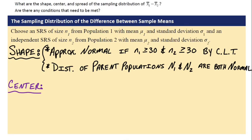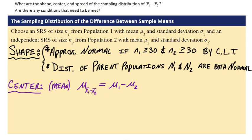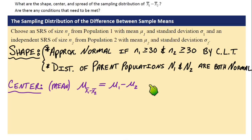How about the center? The center of the distribution — we're talking about the mean. The notation would be mu with a subscript of x bar 1 minus x bar 2, and for that we would just subtract the two population means. So the center would be mu 1 minus mu 2. There isn't a specific condition that goes with this — it actually relies on the randomness condition.